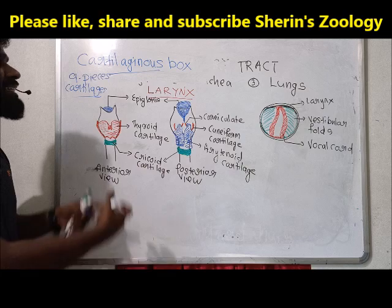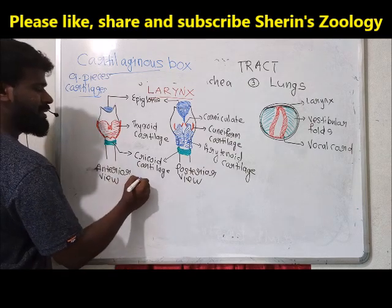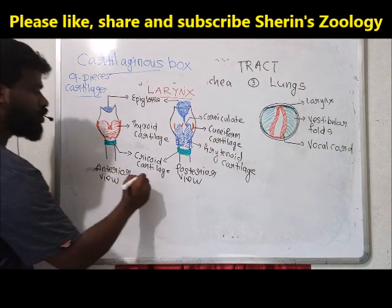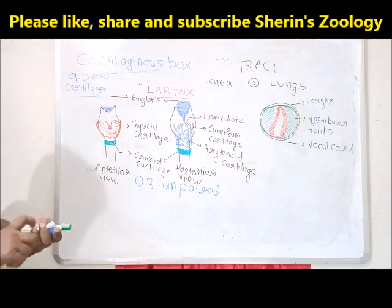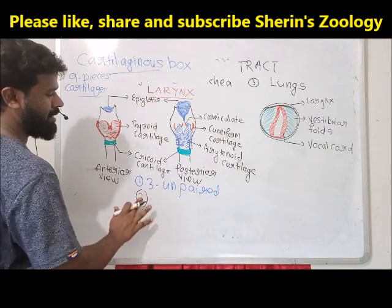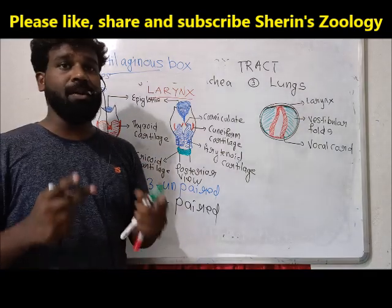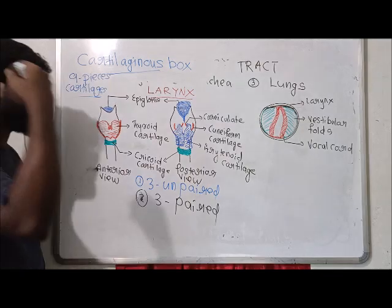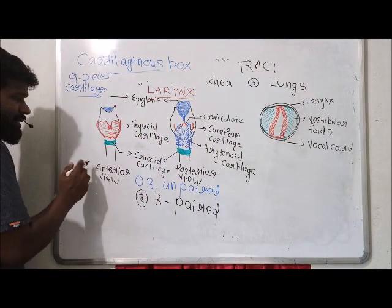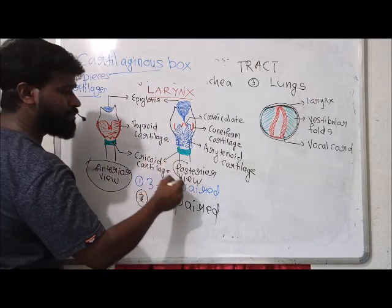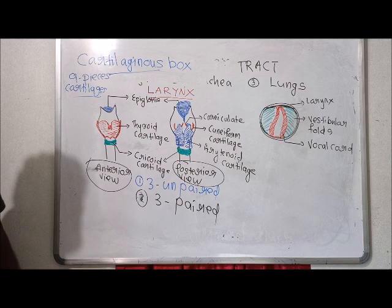The cartilages of larynx are generally of two types. The larynx is supported by a total of nine pieces of cartilage — three unpaired cartilages and three paired cartilages. Looking at the anterior and posterior views of larynx, we can see all nine pieces of cartilage.